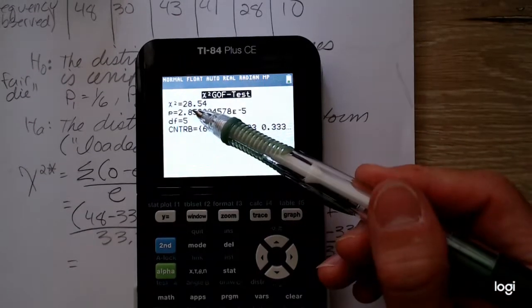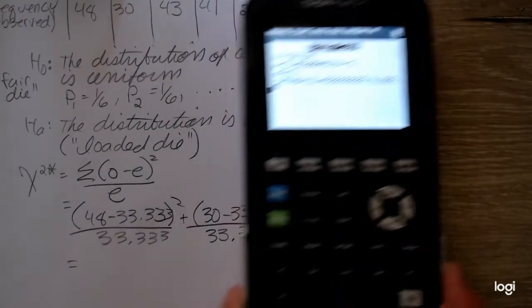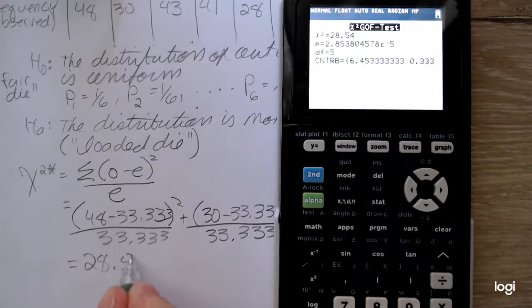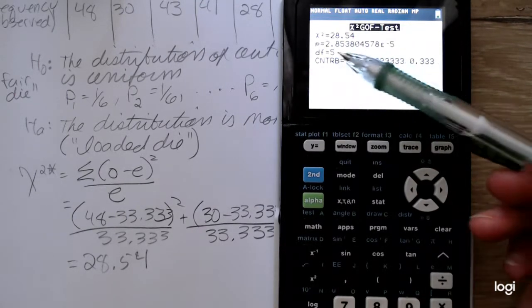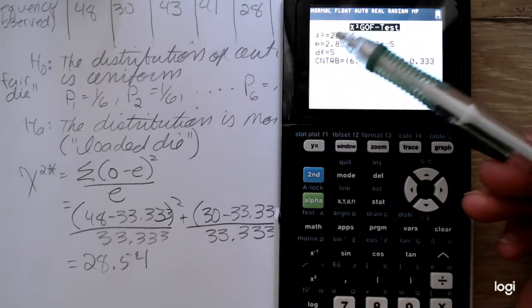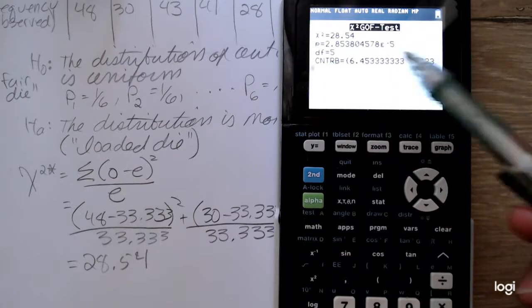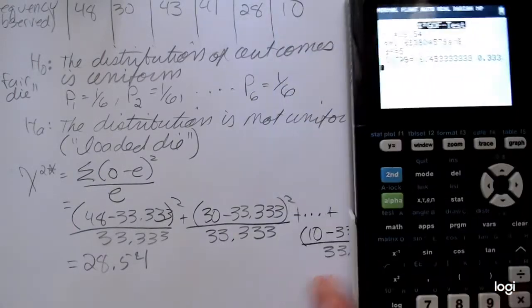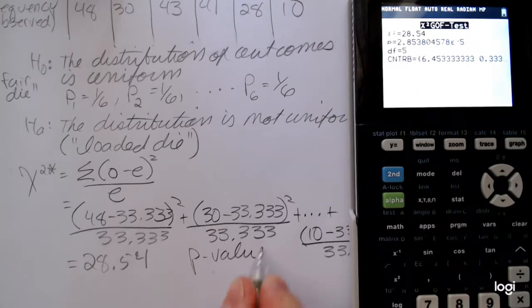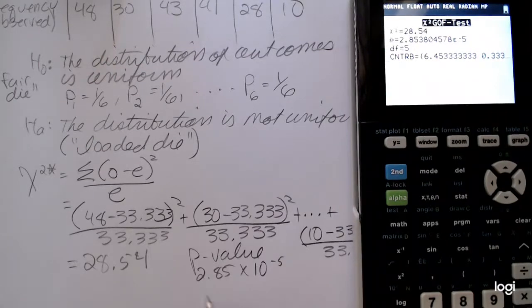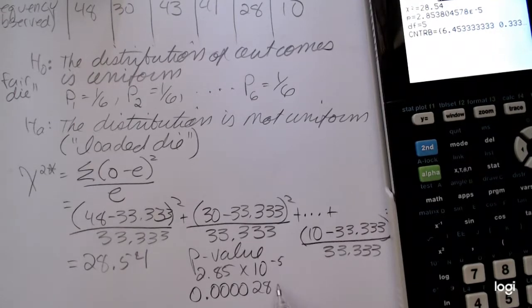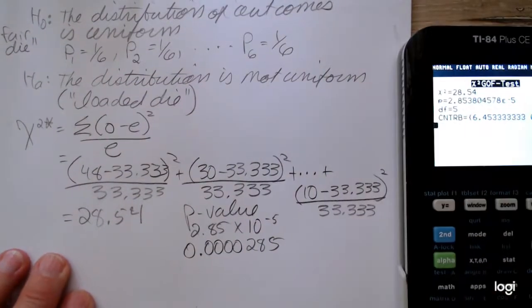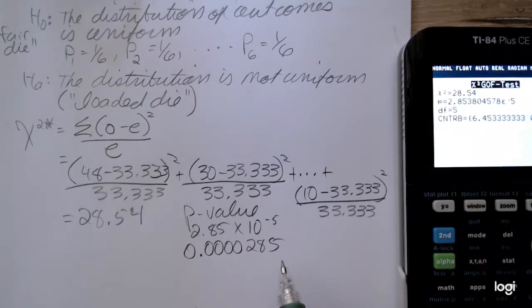So my standardized test statistic is 28.54. And looking at the corresponding p-value, it's in scientific notation. It's going to be 2.85 times 10 to the negative 5th power. So that p-value, 2.85 times 10 to the negative 5th. Or if you wanted to put in the leading 0s, you'd have 4 leading 0s and then your significant digits.